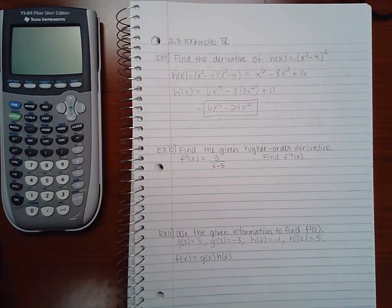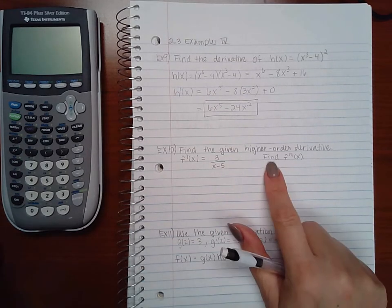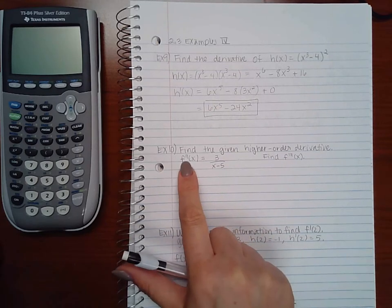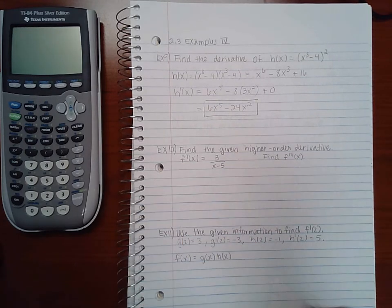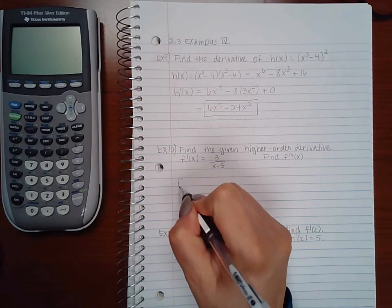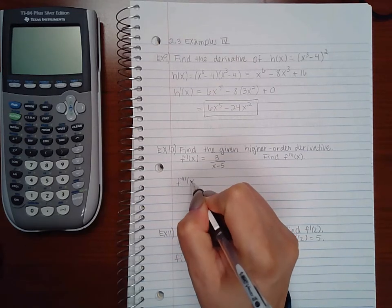Example 10 says find the given higher order derivative. So they want me to find the third derivative but they're giving me the second derivative, which means I only need to take the derivative of it in order to get the third derivative.